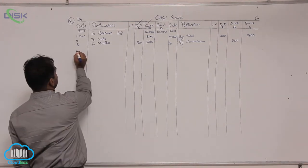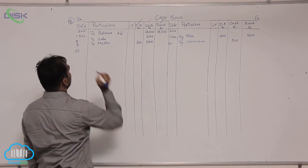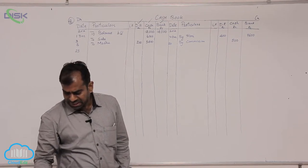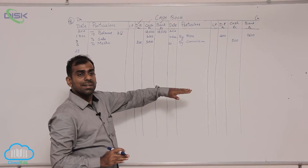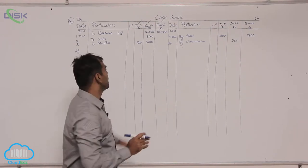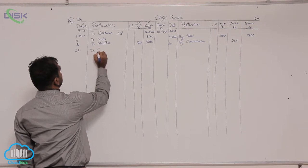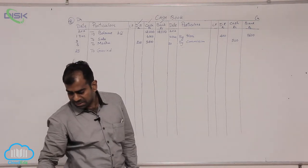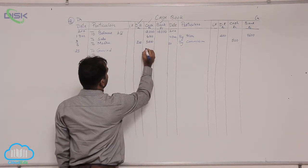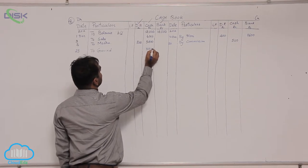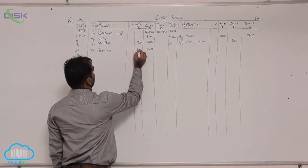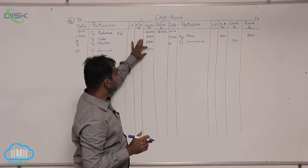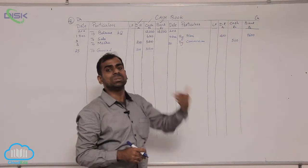On 23rd you received a check from Govind. As we discussed, we have to record it in the cash column. So first I will write 'to Govind', recording the amount in the cash column — that is 3500 — and discount allowed 500 in the discount allowed column. Now on 25th you are depositing this 3500 check into the bank.